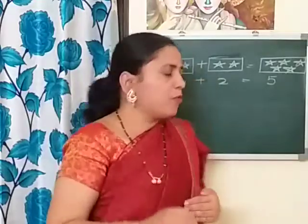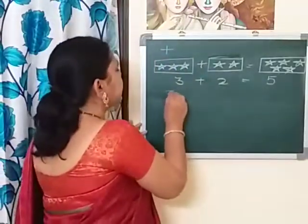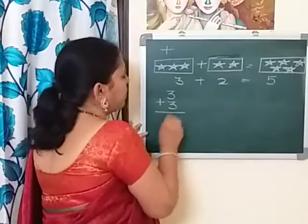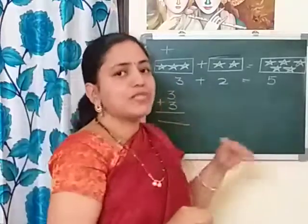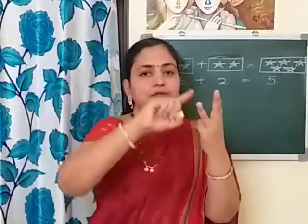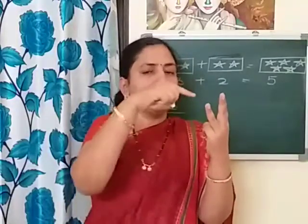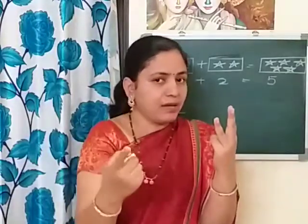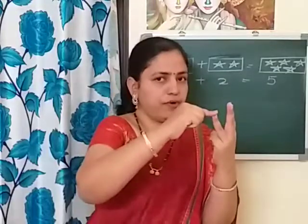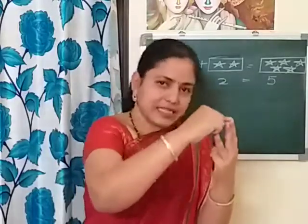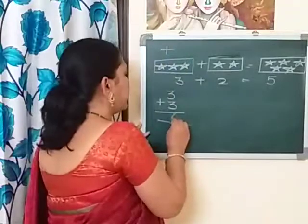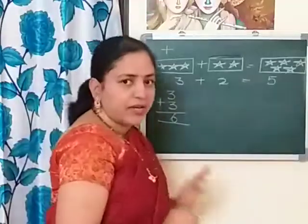Similarly, we learned that addition means counting forward. Forward means the next numbers. Suppose we are adding three plus three. What comes after three? We will count the next three numbers after three. Which numbers come? Yes, correct — four, five, and six. So here we get six.